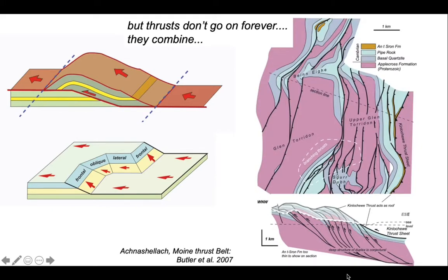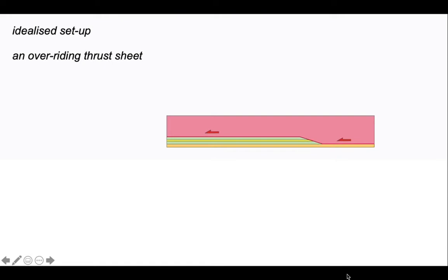We've seen that thrusts have irregular shapes in 3D with frontal, oblique and lateral ramps. But also the individual thrusts don't go on forever - they join up. We see this on the map for the moine thrust belt from which that cross section came. All those thrusts can join up to create a web. Let's look at the geometry of this.